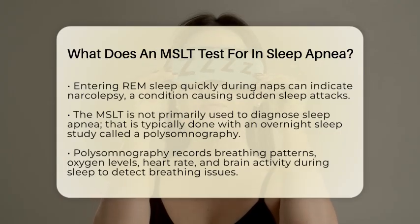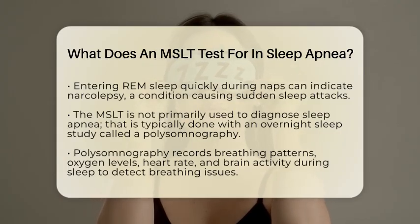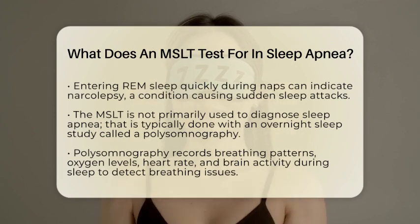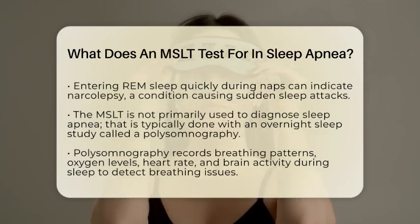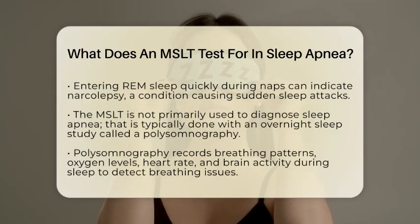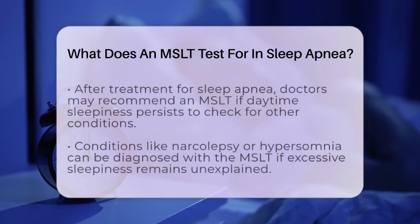If you fall asleep in less than eight minutes on average across all naps, it suggests you might have a sleep disorder that causes excessive daytime sleepiness. If you also enter REM sleep quickly during these naps, it can point to narcolepsy — a condition where people suddenly feel very sleepy and may have sudden muscle weakness.